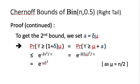To get the second bound, we set a = δμ in our first bound. The probability that y ≥ (1+δ)μ equals the probability that y ≥ μ + a, which is bounded by e^{-2a²/n}. Substituting a = δμ and simplifying, since μ = n/2, we get e^{-2(δμ)²/n} = e^{-2δ²μ²/n} = e^{-μδ²}. This is how we obtain the second bound from the first.